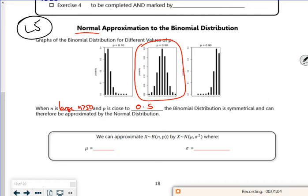Right, so the mean is np, so I think we've mentioned that before. Sigma squared is np times 1 minus p. Now you might see it written as npq, where q is 1 minus p. So that means that sigma is the square root of np times 1 minus p.